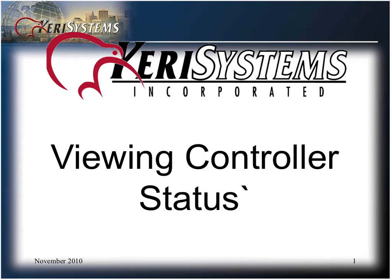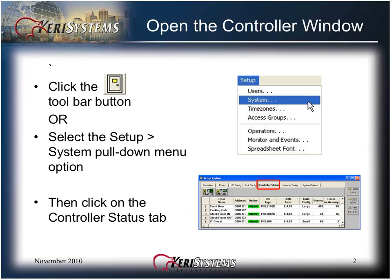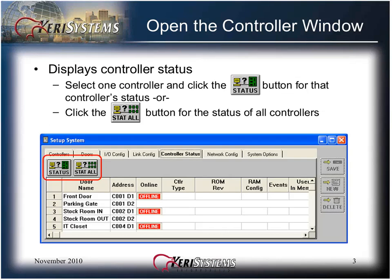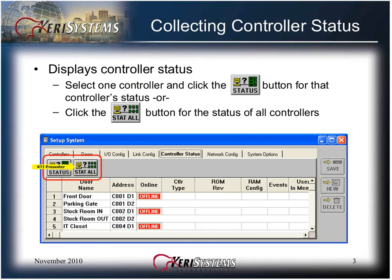Controller Status provides a snapshot of the current configuration of the controllers on the network. You can view one selected controller or all controllers. Open the setup system window from the icon in the toolbar or from the setup drop-down menu and select system. Then click on the controller status tab. The controller status is displayed by selecting one controller and clicking the status button for that controller status, or click the stat all button for the status of all of your controllers.